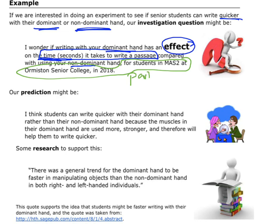These are my participants — I've been quite specific about who they are. Then I want to make a prediction. Thinking: which hand do I think would write quicker — writing with your dominant hand or your non-dominant hand? I'm going to suggest that I think students write quicker with their dominant hand.